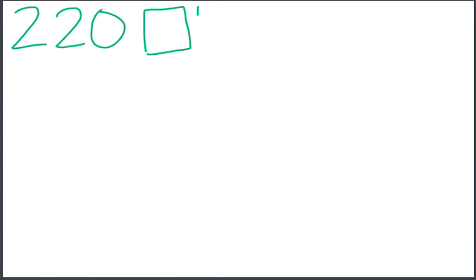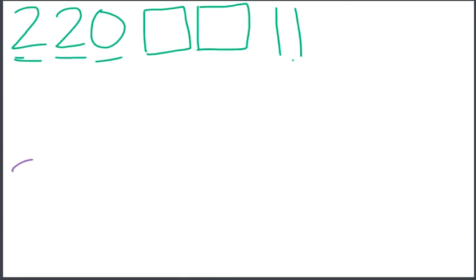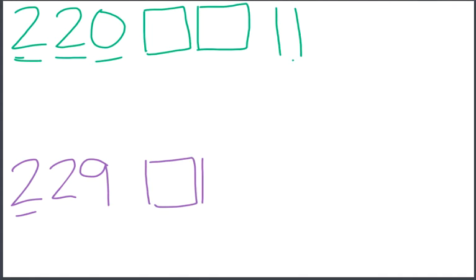I have two hundreds, two flats, two tens, so two longs — 10, 20 — and zero ones. And I'll do 229 in purple. I have two hundreds, two longs — 10, 20 — and I have nine ones.